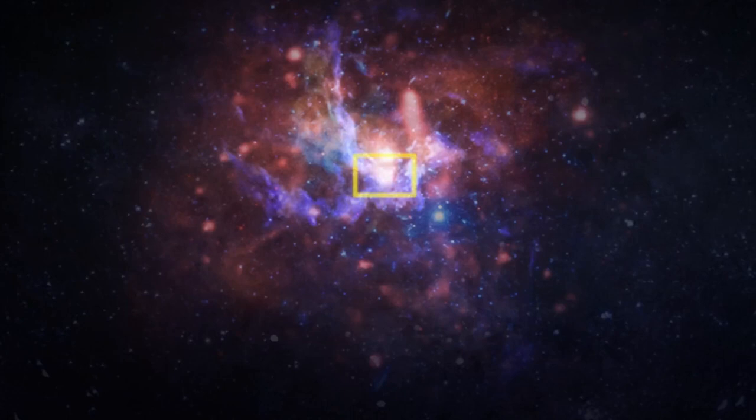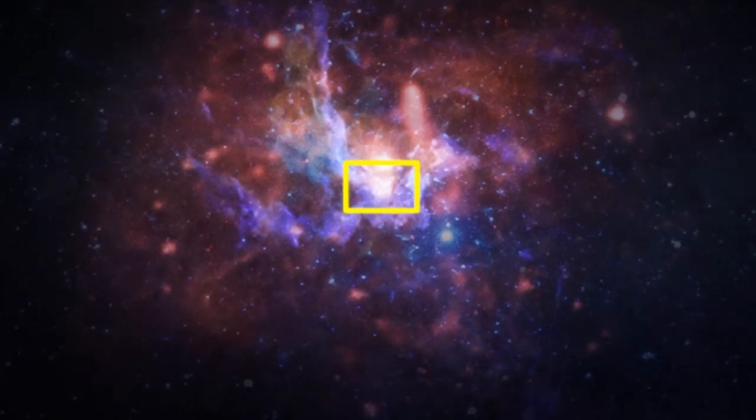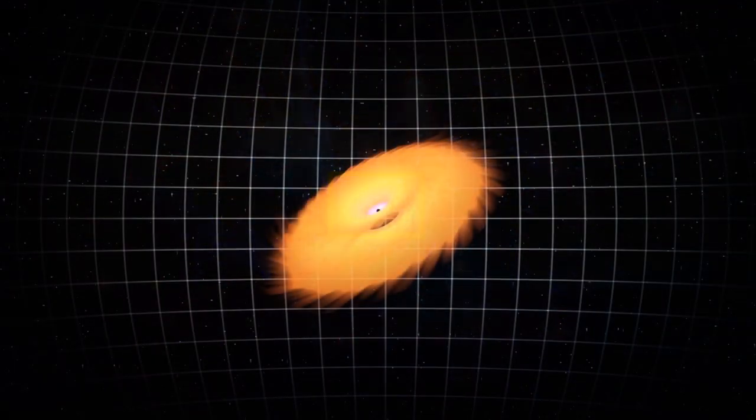Scientists identified a new class of celestial bodies near Sagittarius A, the Milky Way galaxy's supermassive black hole.